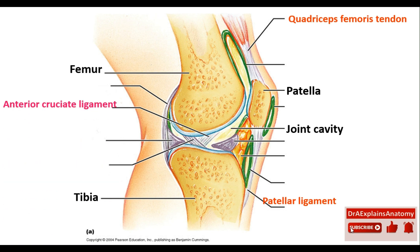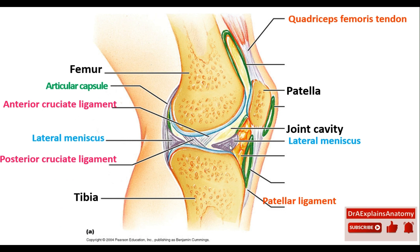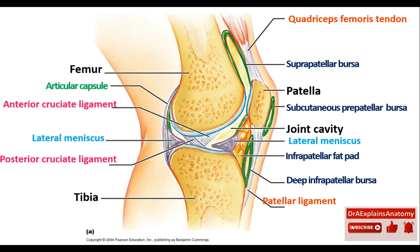We can see the anterior cruciate ligament anteriorly. Posteriorly, we have the posterior cruciate ligament — both form an X. This is the lateral meniscus, which is C-shaped. This is the articular capsule of the joint. This right here is the suprapatellar bursa, this is the deep infrapatellar bursa, this is the subcutaneous prepatellar bursa, and this right here is the infrapatellar fat pad.